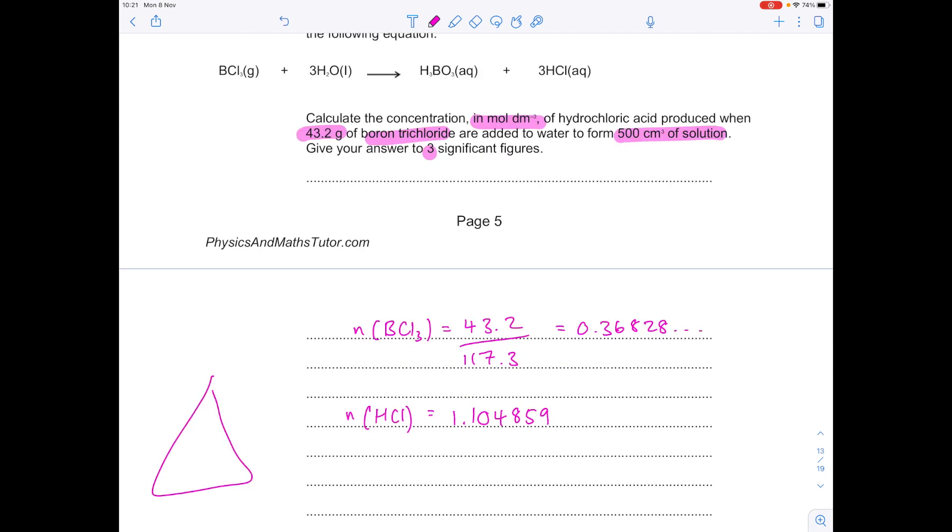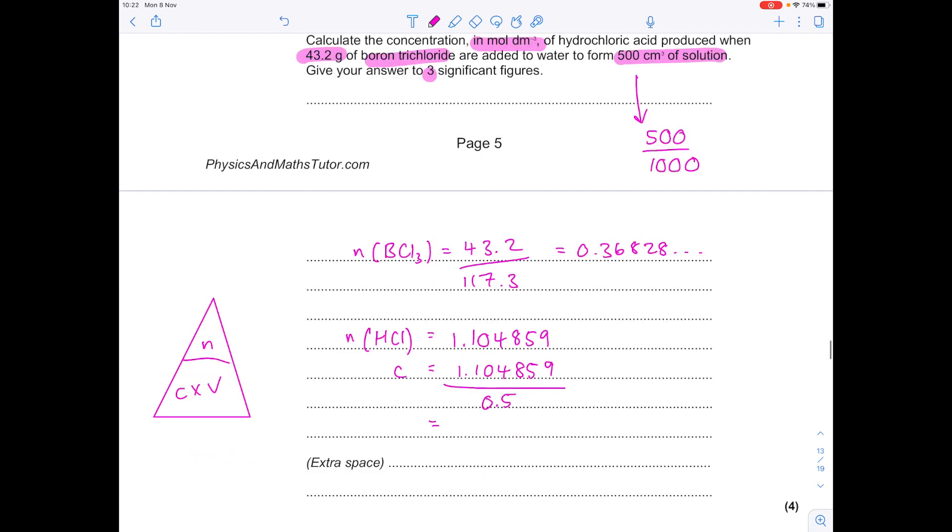And then finally, use this formula triangle, which states the number of moles is concentration times volume. We're being asked to find the concentration, so we need to do the number of moles we've just worked out divided by the volume, which we've been told is 500 cm³. Remember, you need this in dm³, so just divide it immediately by 1,000 to get 0.5. The final answer here is 2.21 mol dm⁻³, which is three significant figures.